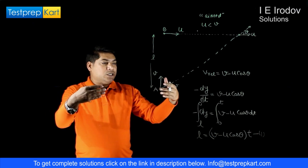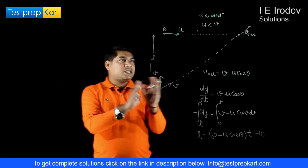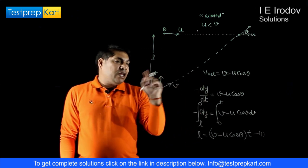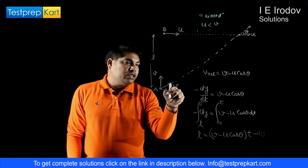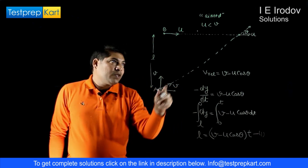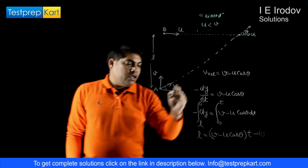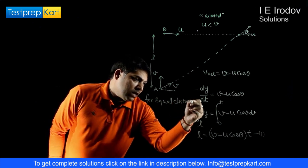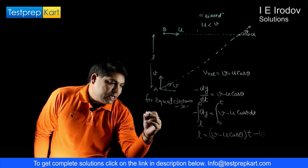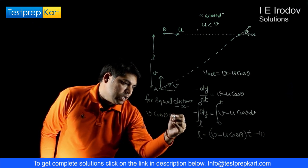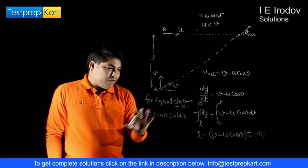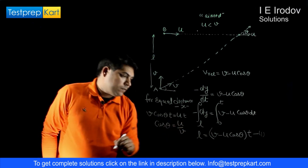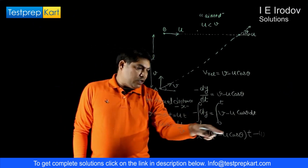Both objects must cover equal horizontal distance in the same amount of time. The horizontal component of velocity for point A is v·cosθ, and for point B it is u. Setting these equal: v·cosθ × t = u × t. Solving, we get cosθ = u/v. We can now substitute this value of cosθ into our first equation.